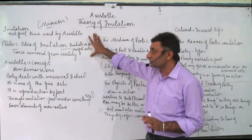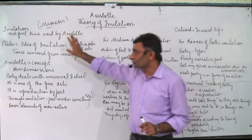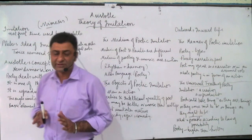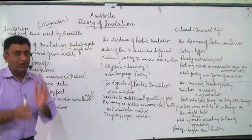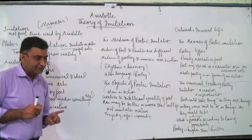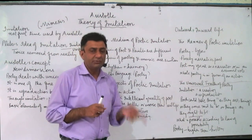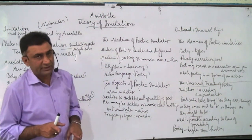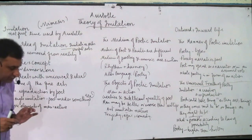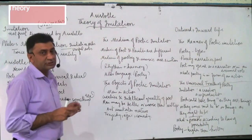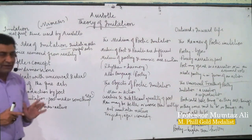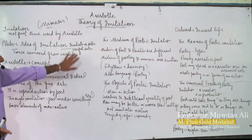Plato's most important idea is the idea of imitation, and he describes it with reference to arts. He divides arts into two types: useful arts and imitative arts. Imitative arts include poetry, music, painting, and sculpture. Useful arts include agriculture, fishing, and medicine — every type of industry is a useful art.